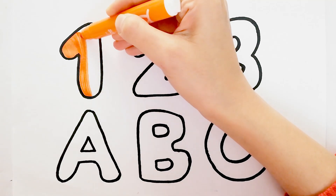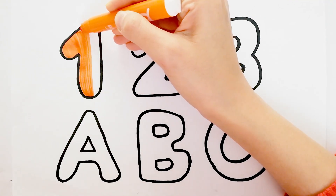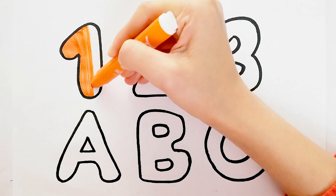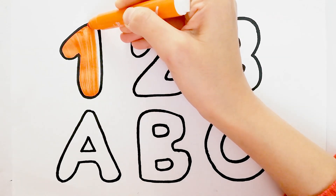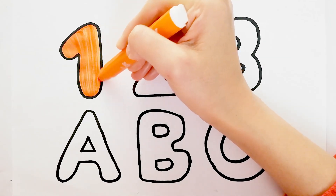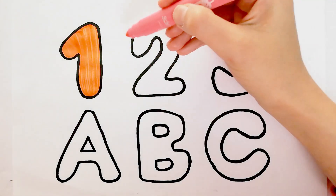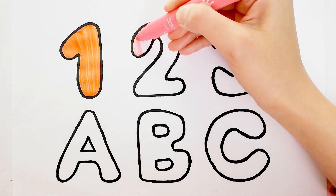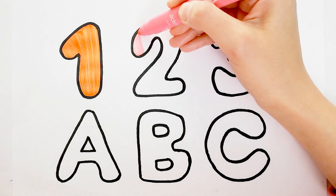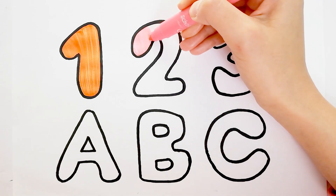A, B, C, D, E, F, G, H, I, J, K, L, M, N, O, P, Q, R, S, T, U, V, W, X, Y, and Z. Now I know my ABCs, next time won't you sing with me?